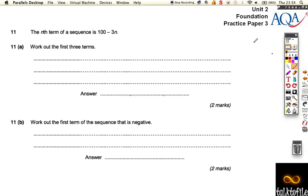Okay, so question 11, we've got something to do with some sequences here. It says the nth term of a sequence is 100 minus 3n. Work out the first three terms.